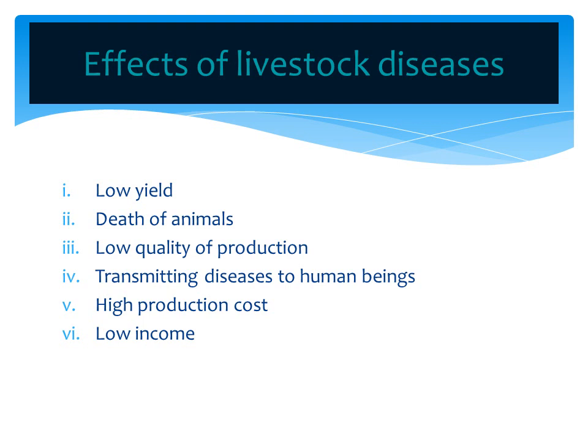Explaining the effects: Low yield means low produce. Diseases lead to reduced produce by animals — an animal usually milked 15 liters may reduce to 12 or 10.